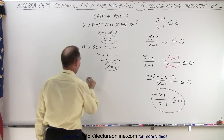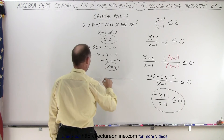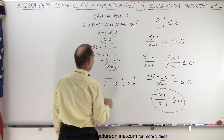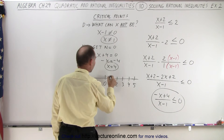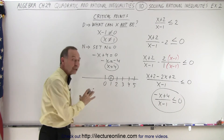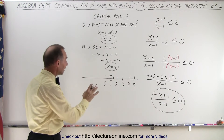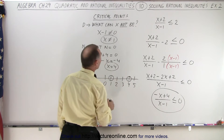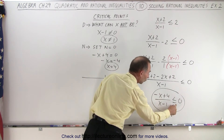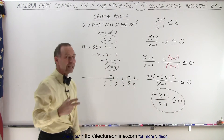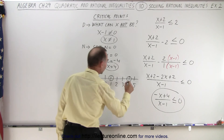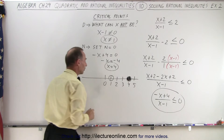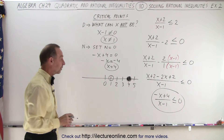Now let's place those on the number line. At x equals one, we draw an open circle because x cannot equal one — it makes the denominator zero. At x equals four, since we have less than or equal to zero, equal to zero is also a valid solution, so we color in that circle. So x equals four will be part of the solution.